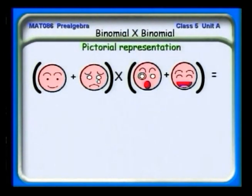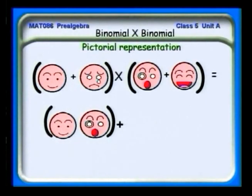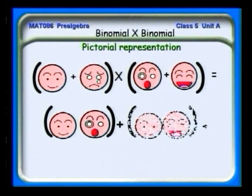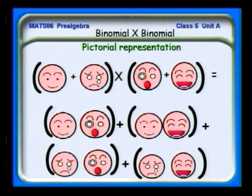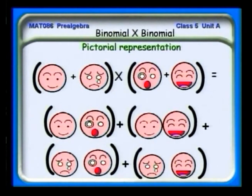Pictorially, we can represent it this way. With a happy face, a crying face, a screaming face, and a laughing face — the first on the left times the first on the right gives happy and crying; the first on the left times the second on the right gives happy and laughing; the second term on the left times the first on the right; and the second on the left times the last on the right. So whenever you're dealing with two binomials multiplied together, you always get four terms. Later you might condense it a bit by looking for like terms.